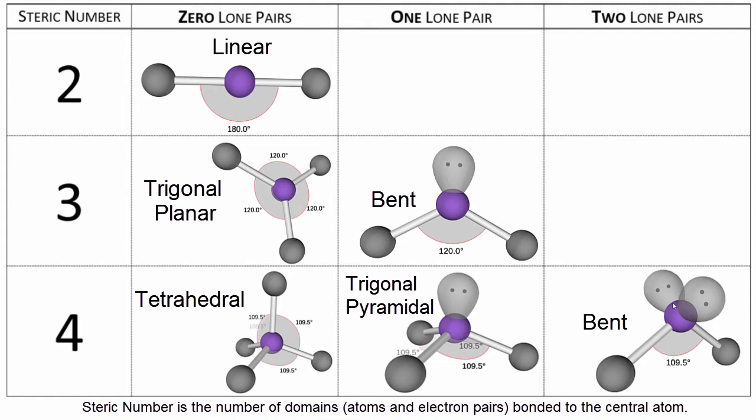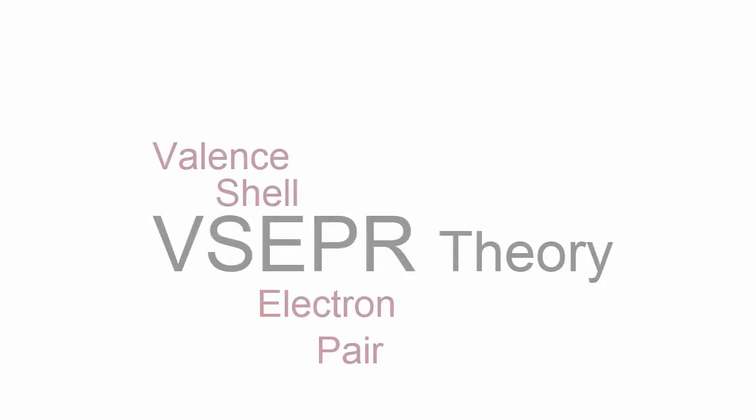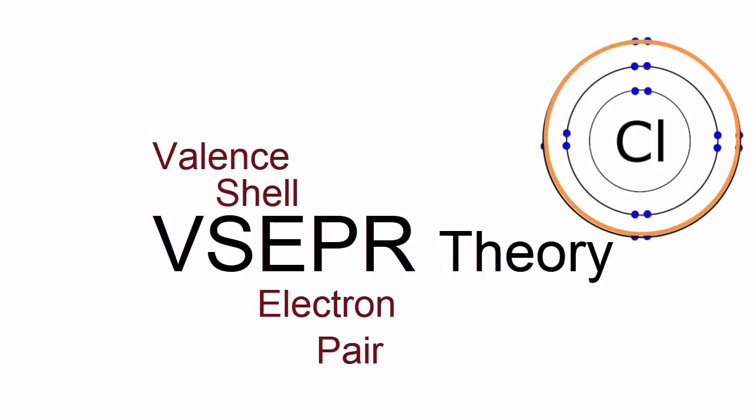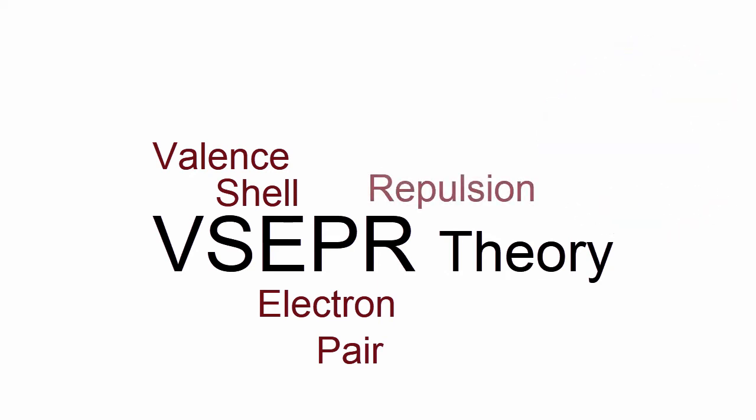When we think about VSEPR, we're thinking about these valence shell electrons. These are the ones on the outside, and they are going to push away from each other and repel. When you have two atoms come together, they have that electric charge on the outside. It pushes away, and that's what gives the molecules their shape when they are bonded.